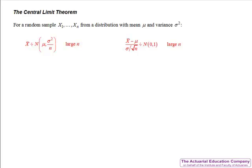Alternatively, it is possible to derive the central limit theorem in terms of the distribution of the sum of sample values, in which case the sum of X is normally distributed with mean n times mu and variance n times sigma squared. We can use this to calculate probabilities involving the sum.